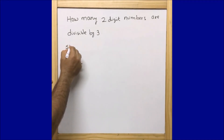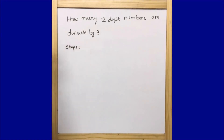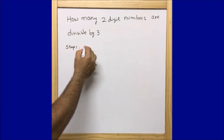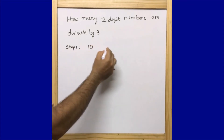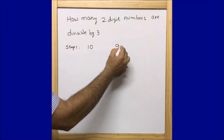So once we see this question — how many two-digit numbers are divisible by three — we will find out in three steps. Step one: the lowest two-digit number is 10 and the highest two-digit number is 99.